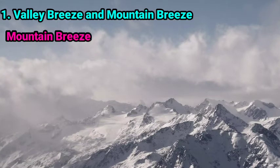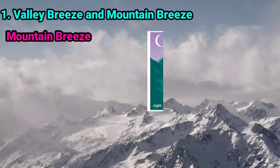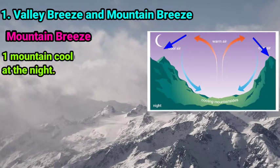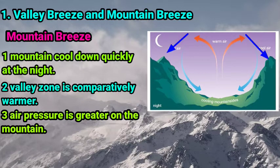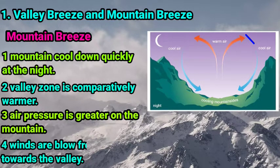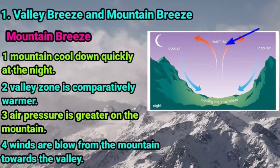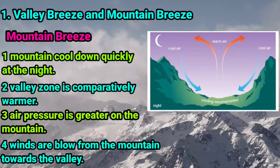Let's see what is the mountain breeze and how it is generated. Children, at night, mountains cool down quickly. Comparatively, the valley zone is warmer. Therefore, the air pressure is greater on the mountain, and the winds blow from the mountain towards the valley. The hot and light air from the valley is pushed upward, and the cool air from the mountain rushes down into the valley. Due to this situation, the mountain winds or mountain breeze are generated.